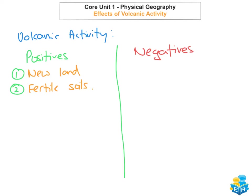The reason for this is when the lava comes out on the surface, it cools, it solidifies and forms into basalt rock, which over time when it breaks down is very rich and fertile and makes the soil very good for growing crops. The third positive of volcanic activity is tourism.